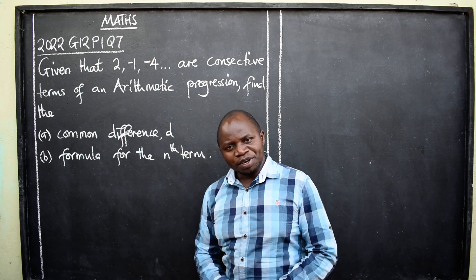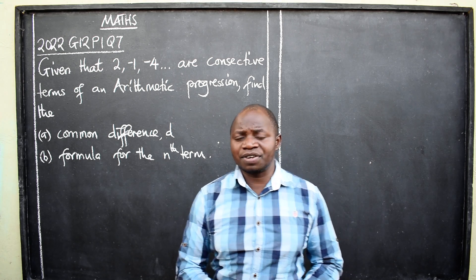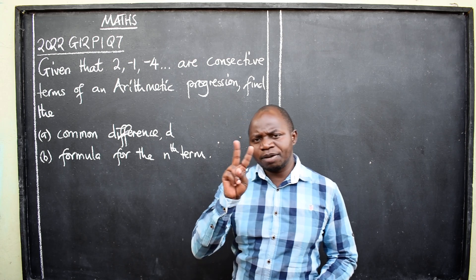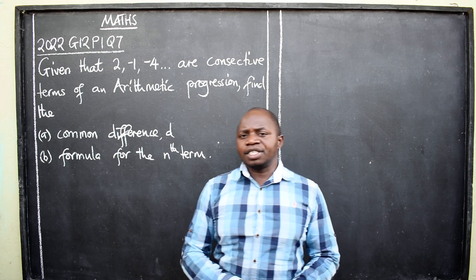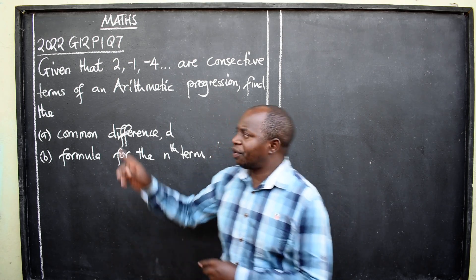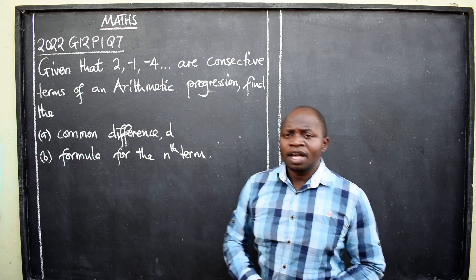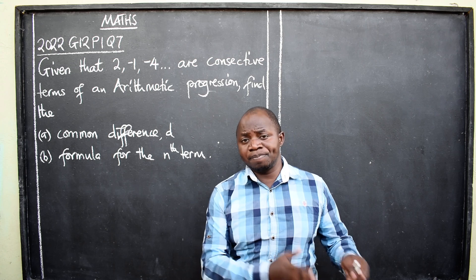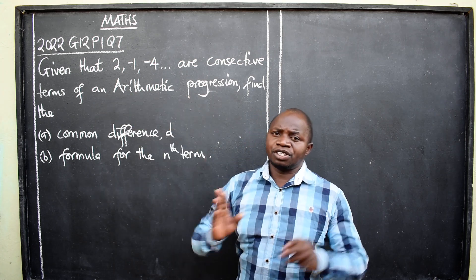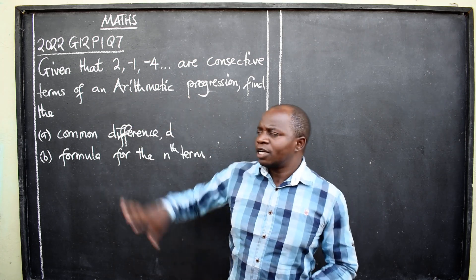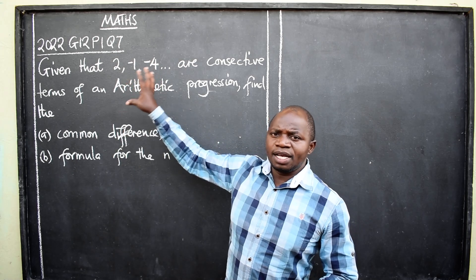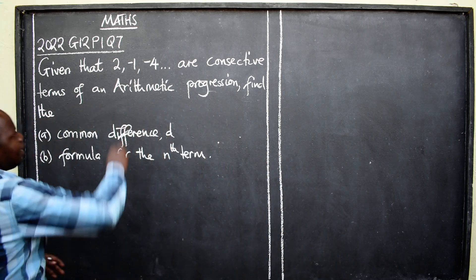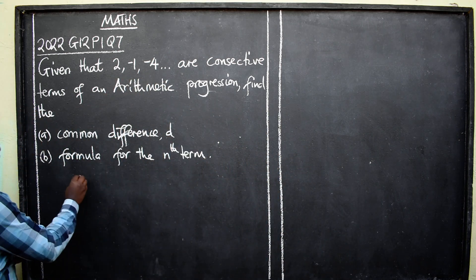This question is from a topic called sequences and series. Under sequences and series we have two types of sequences: arithmetic progression (AP) and geometric progression (GP). Here we are dealing with the AP — arithmetic progression.